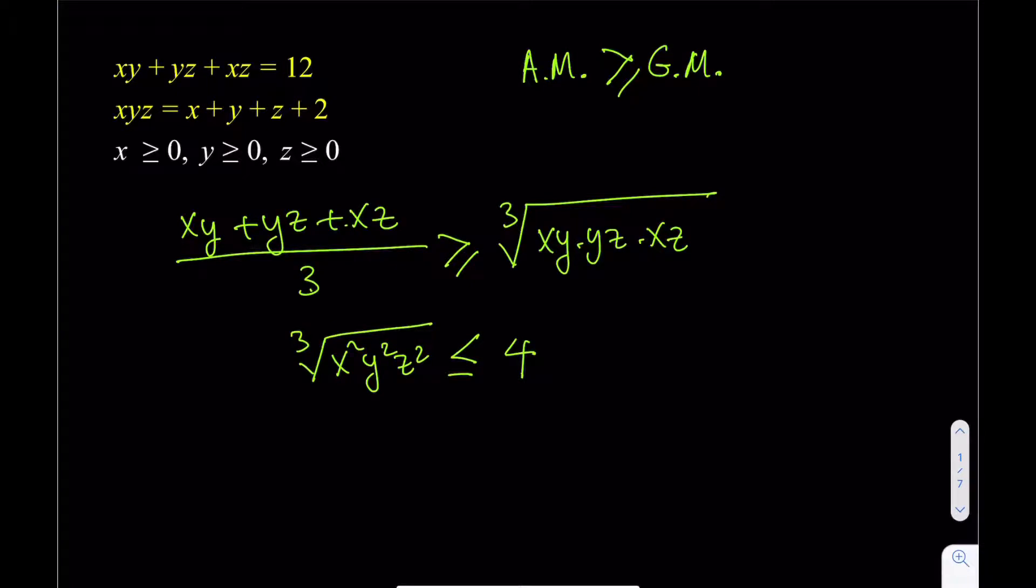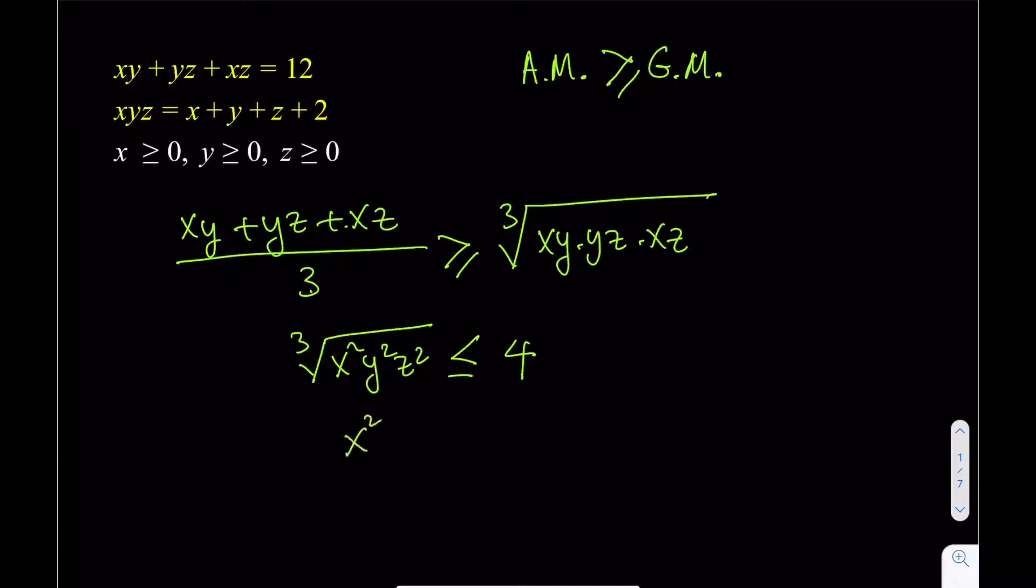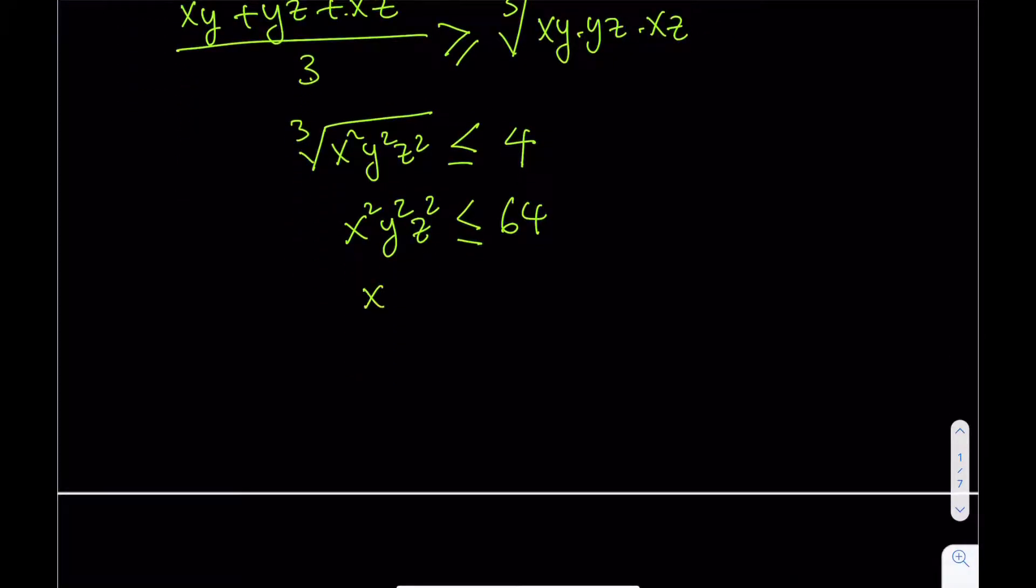Since XYZ are non-negative, I can just go ahead and cube both sides. And from here, we'll be getting X squared Y squared Z squared is less than or equal to 4 cubed, which is 64. And then I can go ahead and take the square roots. Again, they're non-negative. So, we'll be ending up with the inequality XYZ is less than or equal to 8. So, that's the very first inequality that we're going to be getting. So, we have an upper bound for XYZ.